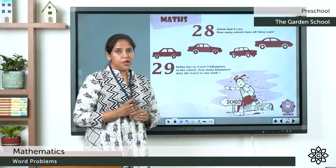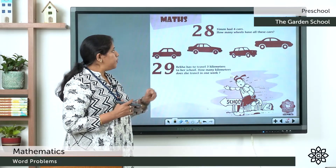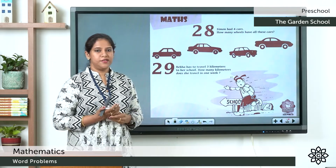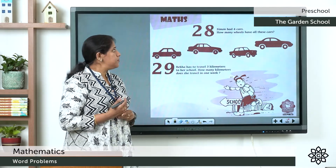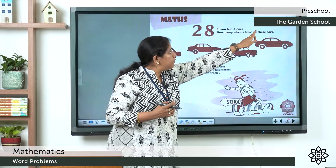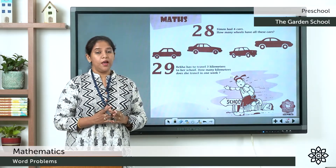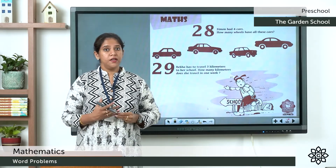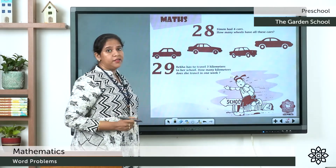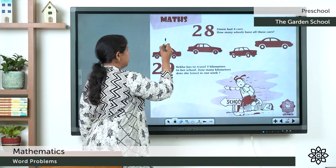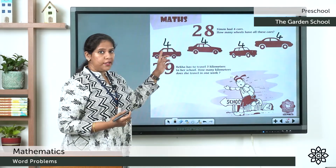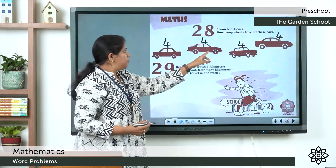Take page number 106, question number 28. Simon had four cars. How many wheels do all these cars have? Each car has four wheels. This is repeated addition: 4 plus 4 plus 4 plus 4. Four is the number, and you repeat it four times.